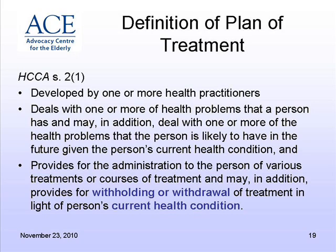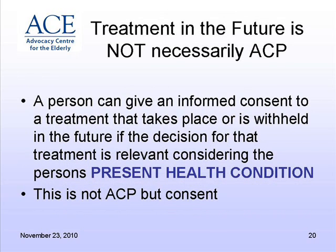That's the important part — the substitute can only make a decision based upon the current health condition. In the past we used to see tick boxes where, for example, people would tick that their father has schizophrenia and mark do not resuscitate — those two things have nothing to do with each other, and you couldn't make that decision. But if your father has a heart condition and you've discussed it with the health practitioner and the outcome of resuscitation isn't good, you could consent based on that because it's based on the person's current health condition. A person can give informed consent to treatment that takes place or is withheld in the future if that decision is relevant considering the present health condition — this is not advanced care planning, but a consent.